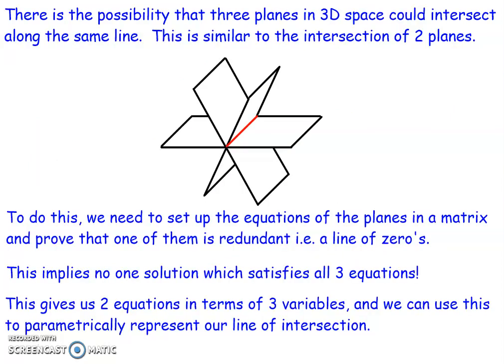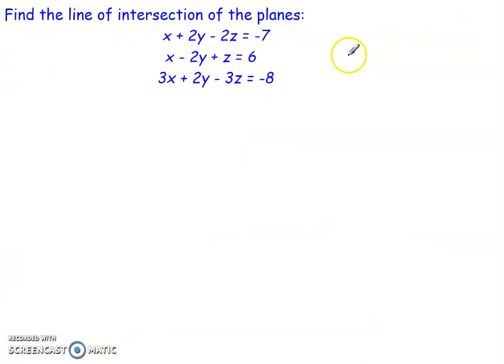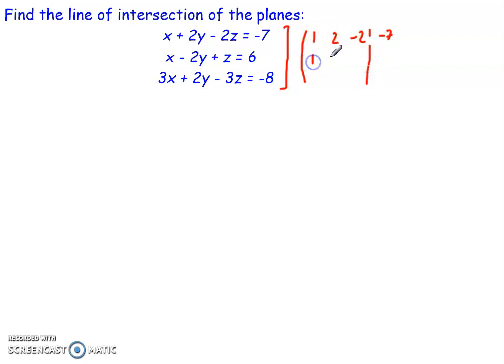The second possibility is that all three planes in 3D space intersect along the same line. This is similar to the intersection of two planes where we get a line of intersection. To solve this, we set up the equations in a matrix and show that one row becomes redundant — a line of zeros. For example, with planes giving the augmented matrix rows: 1, 2, negative 2, negative 7; then 1, negative 2, 1, 6; and 3, 2, negative 3, negative 8.